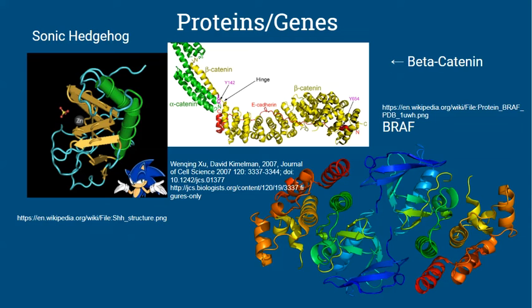The next gene that can cause ameloblastoma is BRAF. BRAF is a gene that codes for the BRAF protein, which signals cell growth to occur. When the BRAF gene is overactive, too much of the BRAF protein is made and cell growth is accelerated. This is why the BRAF gene is associated with many tumors and cancers, such as ameloblastoma.